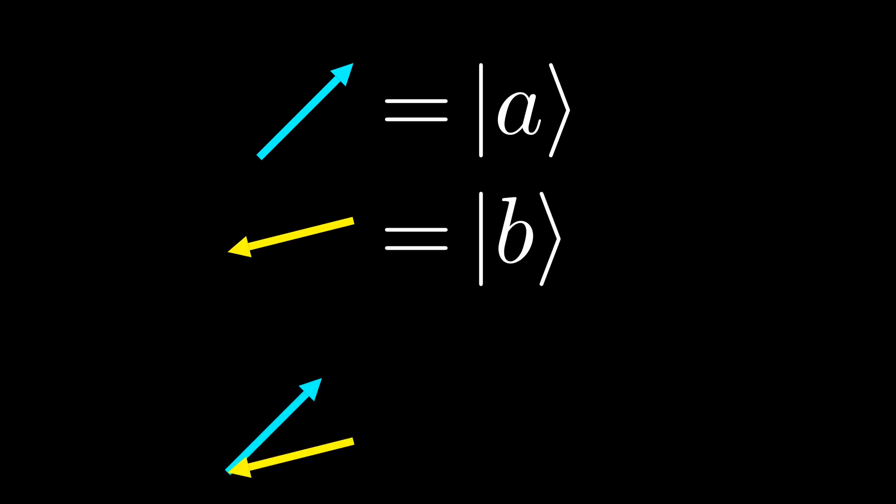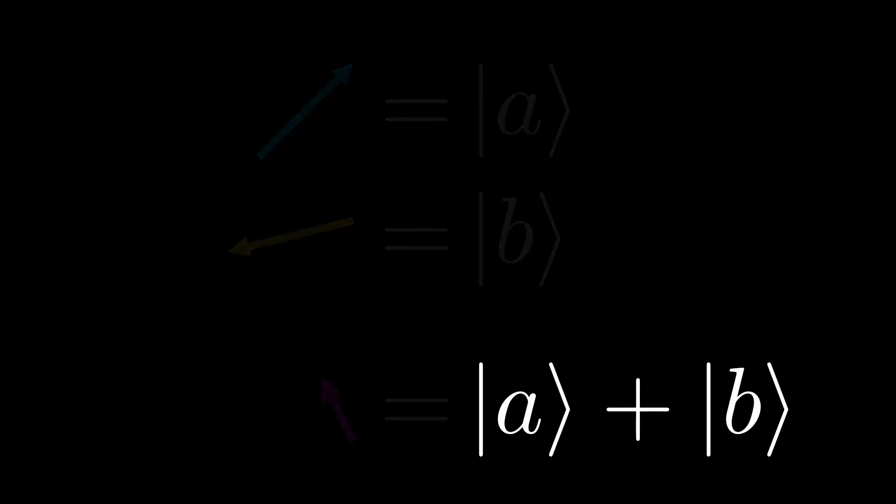The linear combinations of vector A and vector B can now be reasoned with purely symbolically, without having to draw any arrows.